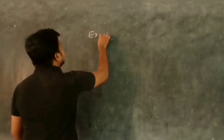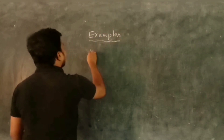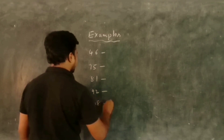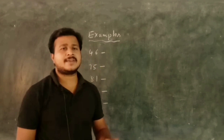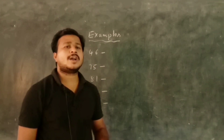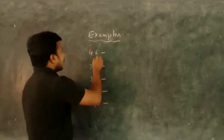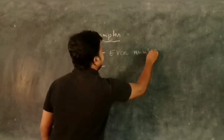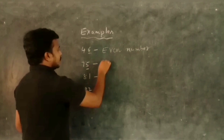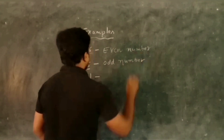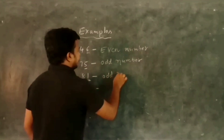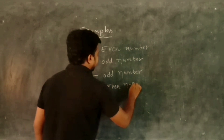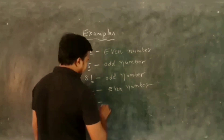Some examples. All even numbers end with 0, 2, 4, 6, and 8; all odd numbers end with 1, 3, 5, 7, and 9. So: 46 ends with 6 — even number. 75 ends with 5 — odd number. 81 ends with 1 — odd number. 92 ends with 2 — even number. 48 ends with 8 — even number.